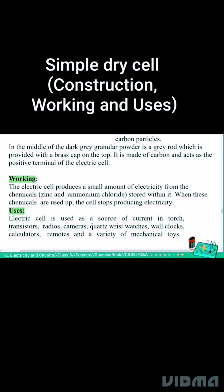The electric cell is used as a source of current in torches, transistors, radios, cameras, cords, wristwatches, wall clocks, calculators, remotes and controllers.